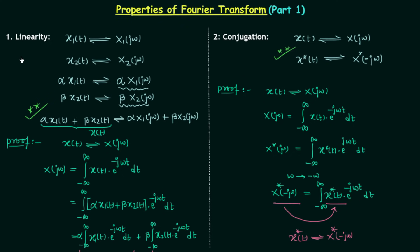So this is all for the two properties — linearity and conjugation. If you have any doubt, you may ask in the comment section.